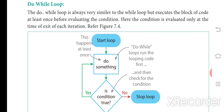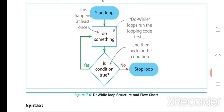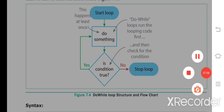The do-while loop is always very similar to the while loop but executes the block of code at least once before evaluating the condition. The condition is evaluated only at the time of exit of each iteration. In the flowchart: first we start the loop, then execute the code, then check the condition — if true, loop back to execute again; if false, exit. So at least once the execution will happen in a do-while loop.